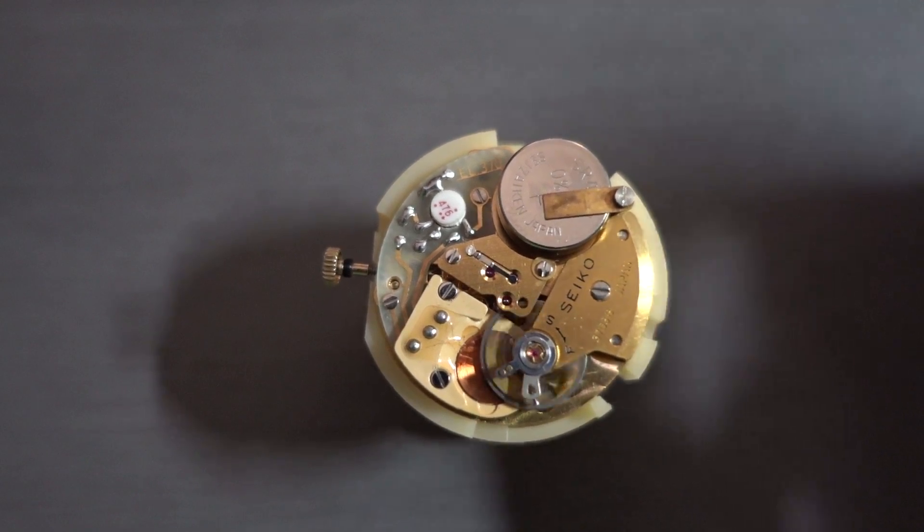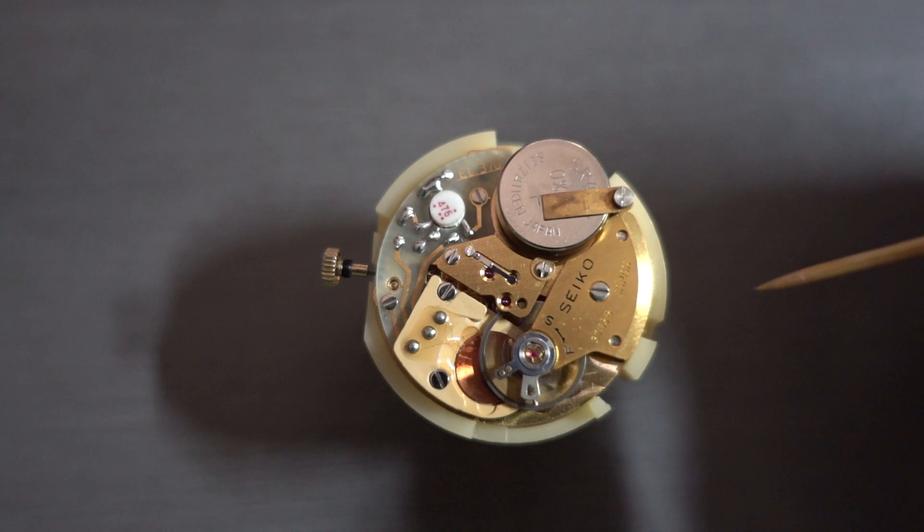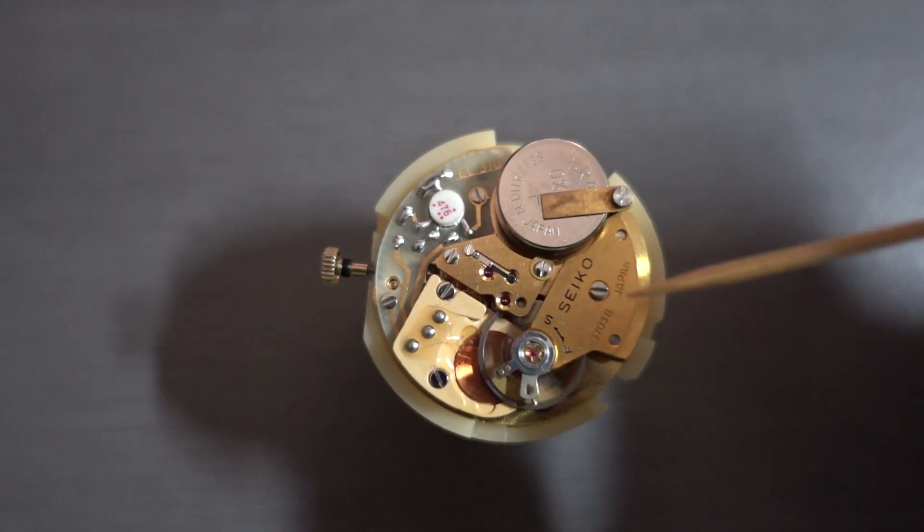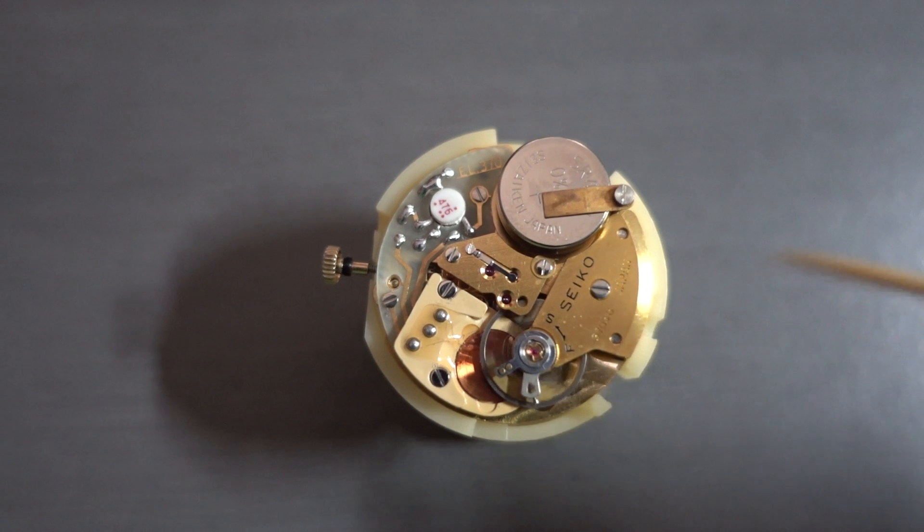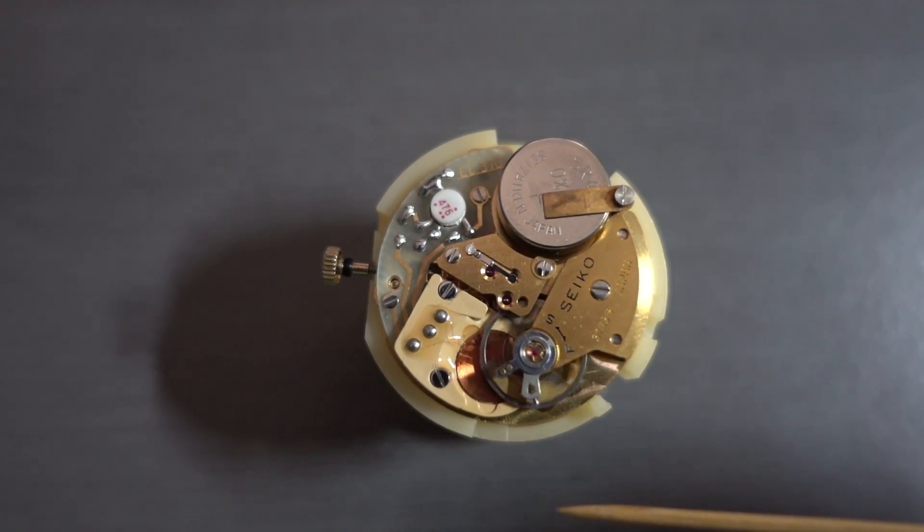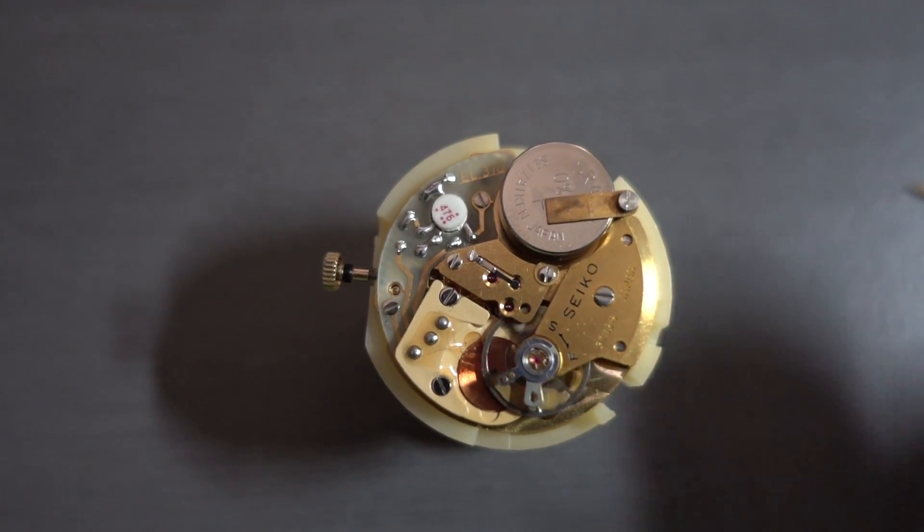You can check the timing on these on a standard time grapher. They run at 21,600, I think off the top of my head, beats per hour. You can also tune them just like a standard mechanical watch. They just have the standard timing adjustments there, and it's the same as anything.